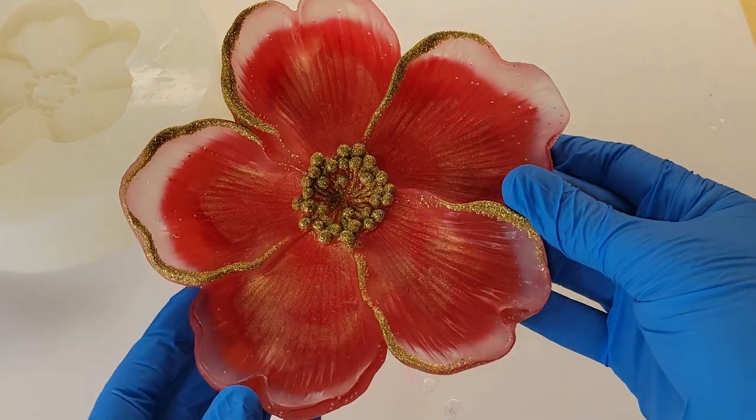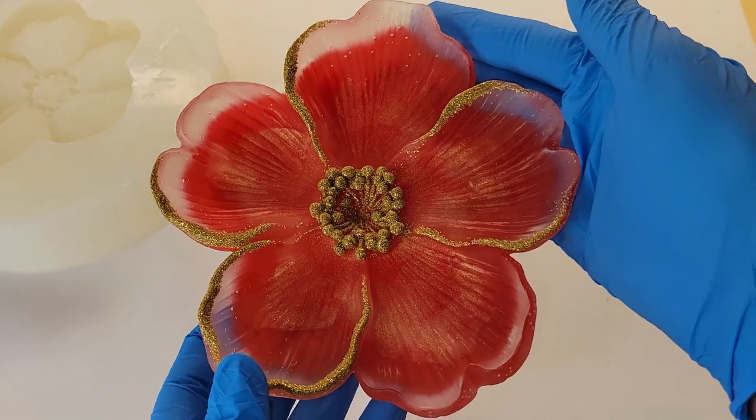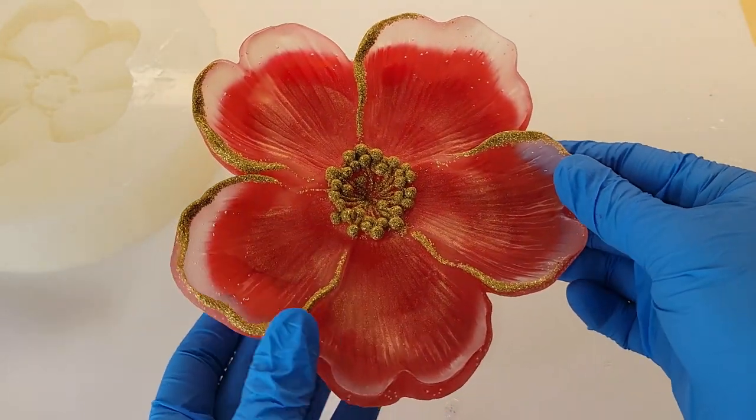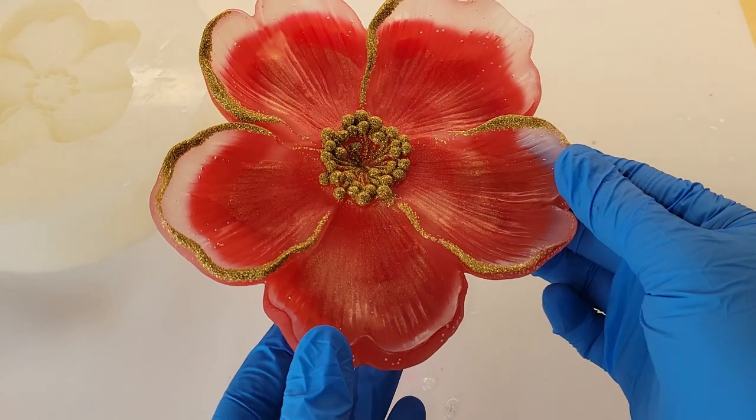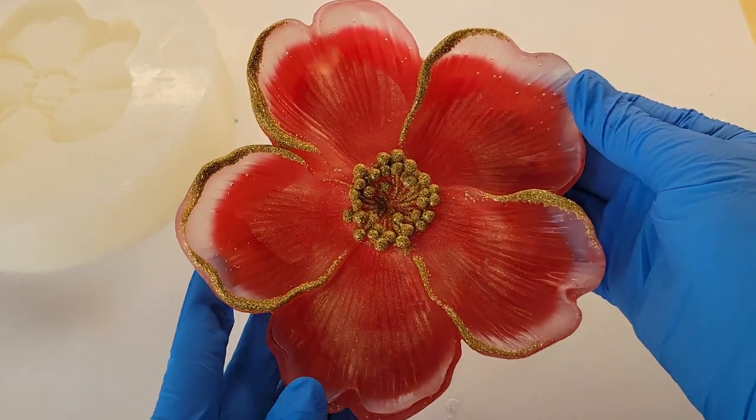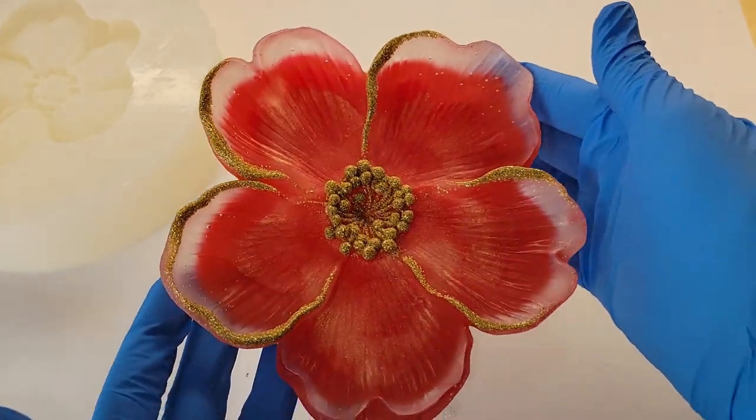Maybe check it like 30 minutes after you pour and see if there's any bubbles back there. I did not do that, I just spritzed it that one time after I poured and then left it. So maybe check it about 30 minutes after you pour, and then if there's any bubbles go ahead and pop them and you won't have that problem.